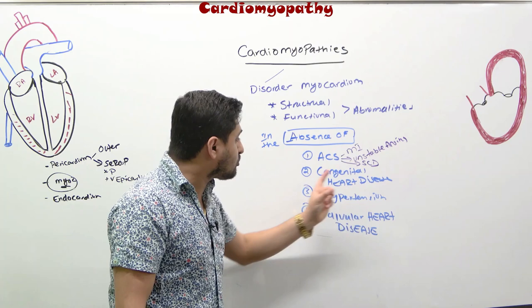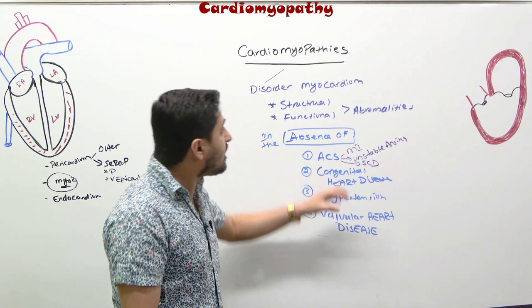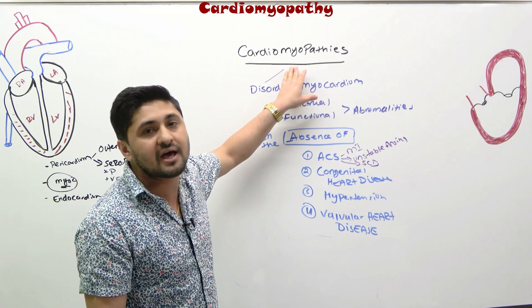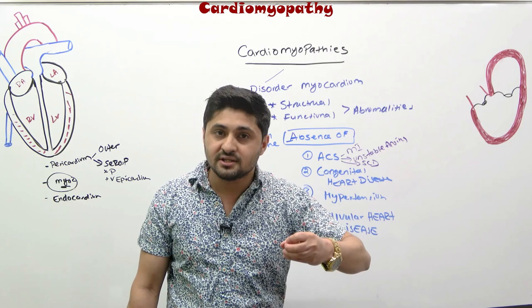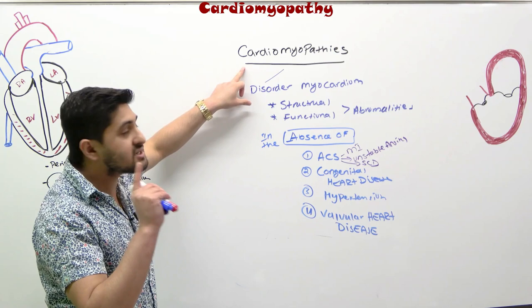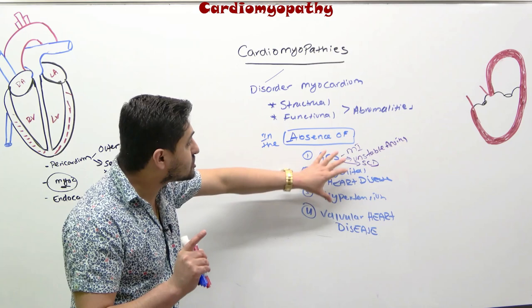Acute coronary syndromes, congenital heart disease, hypertension, and valvular heart diseases do not come under the classification of cardiomyopathy. Congenital heart diseases include conditions like atrial septal defect, ventricular septal defect, and tetralogy of Fallot. Make sure you know your definition well and eliminate these disorders when thinking about cardiomyopathies.